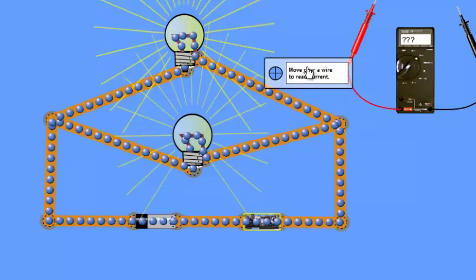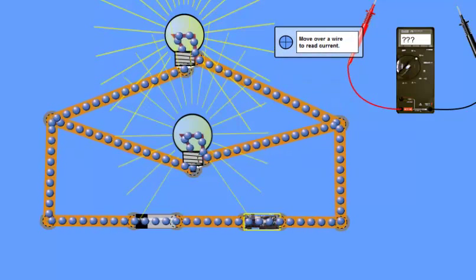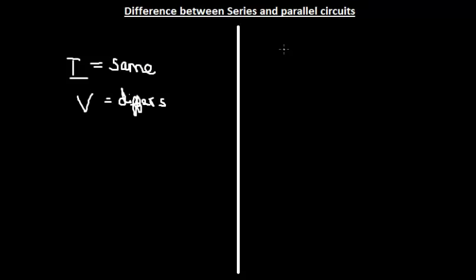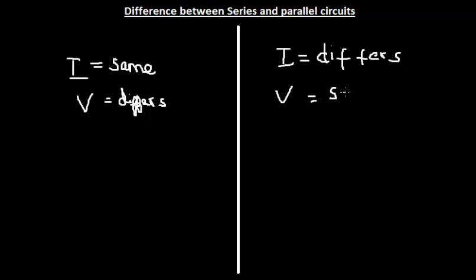So in a parallel circuit, the potential difference across the elements remains the same, while the current alone changes. The current I differs in a parallel circuit, and the potential difference V remains the same.